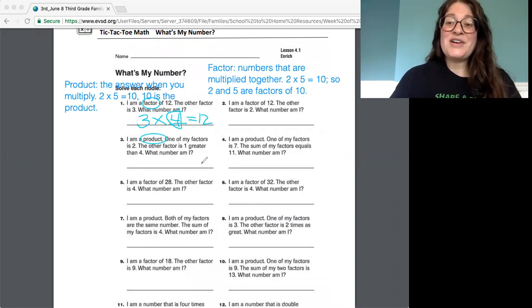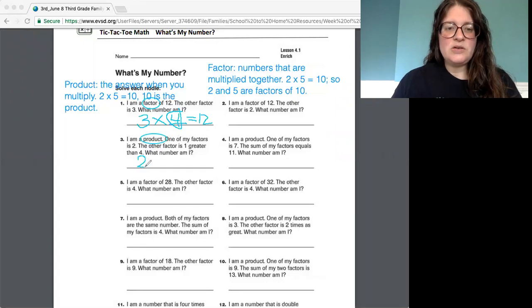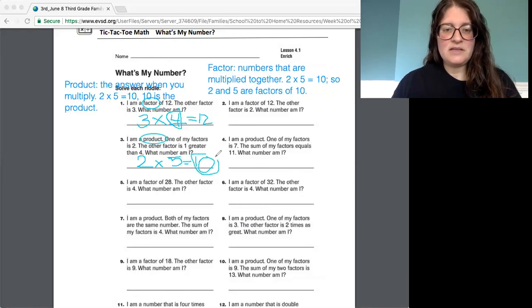Okay we'll do one more and then you can do the rest on your own. I am a product. One of my factors is 2. The other factor is 1 greater than 4. What number am I? Oh and this should be pretty easy because we were just doing this in our examples. So 2 is one of the factors. The other factor is 1 greater than 4. So 1 greater than 4 is going to be 5. And what they want to know is the product. What number am I? We were just practicing that. It's 10. And I would circle 10 because that was the number they were looking for even though we had to do some guessing for 5.